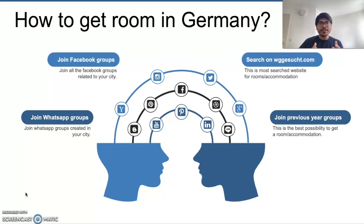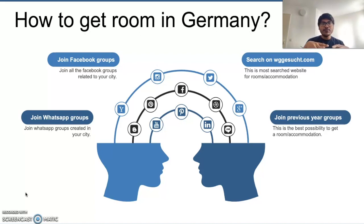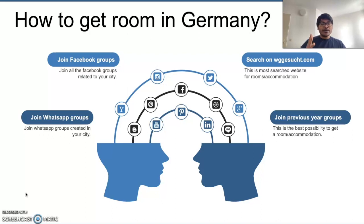So join the previous year groups — connect with people who are studying in that particular course from last year and the year before, two years back. Join those groups and ask them if they can send you the group link or somehow get you added, because people go to internships, Erasmus programs, or do jobs in other cities. That's how they sublet their rooms. I am also staying in a sublet room right now, and I found this advertisement in my previous year group only.